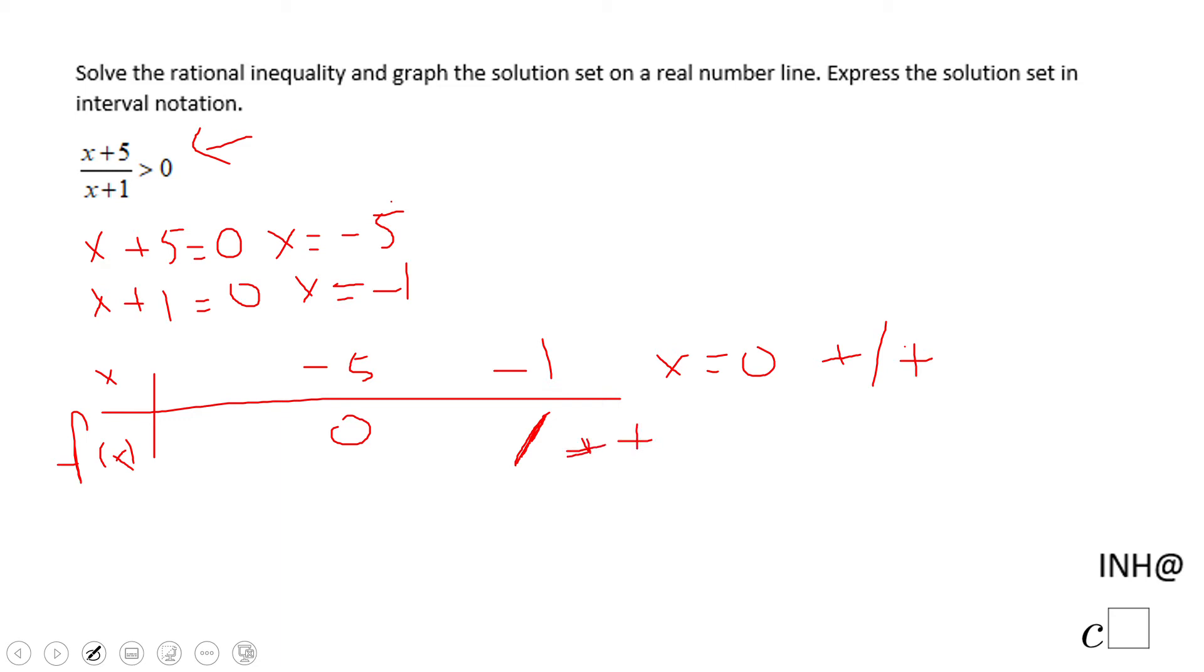The function f of x is positive when x is greater than negative 1. Now if we go to between negative 1 and negative 5, like x equals negative 2, x plus 5 is a positive number, x plus 1 is going to be a negative number, so that quotient will be negative here.